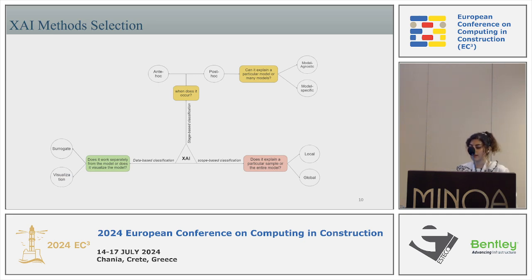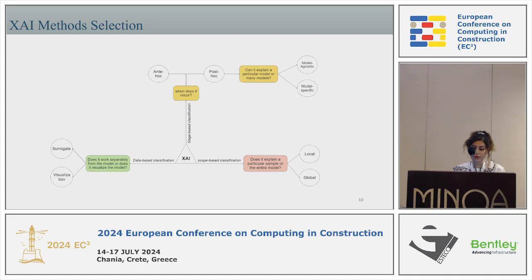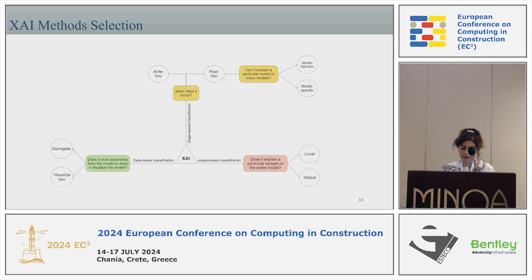Explainable AI is a collection of methodologies designed to enable human users to understand and trust the outcomes of artificial intelligence systems. We can see in this figure three different stages to go through when selecting explainable AI methods. The ante-hoc methods are built into the model during development, whereas post-hoc methods are applied after model development to explain decisions. Local explanations focus on individual predictions, in comparison with global explanations that provide understanding of overall model behavior.